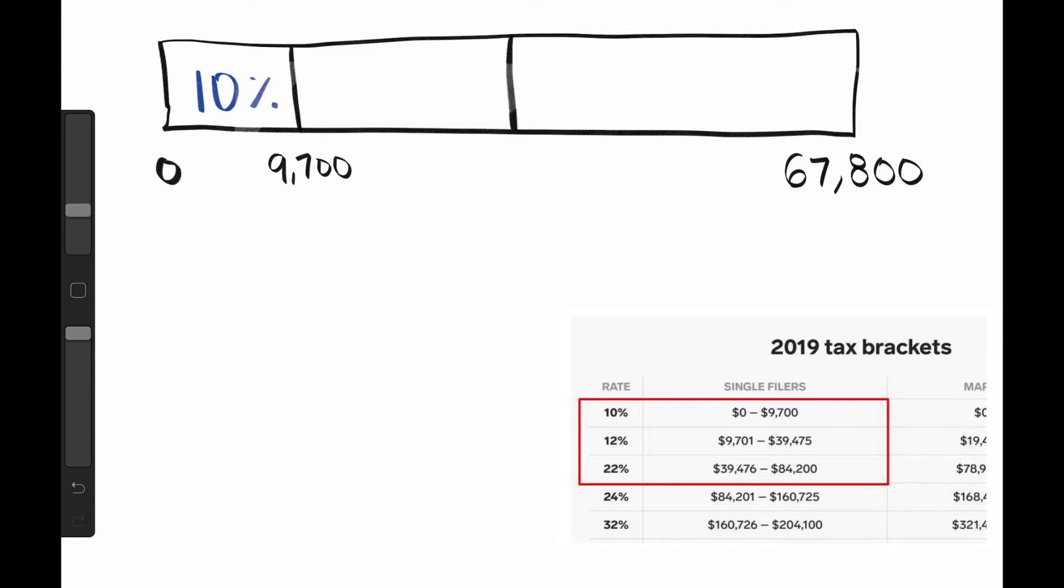Then we can draw a line at $39,475 for the second bracket, which is taxed at 12%. And according to the table, this last portion will be taxed at 22%.